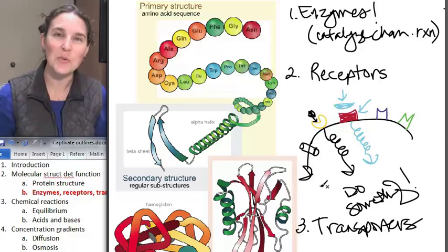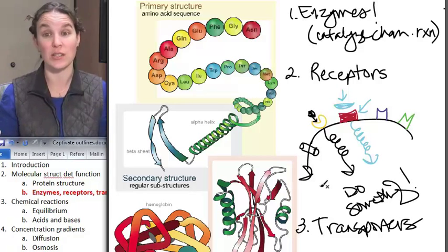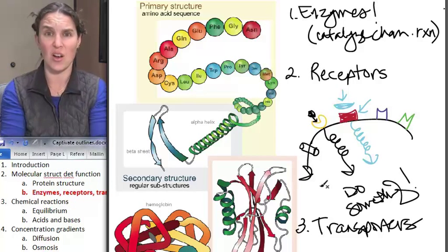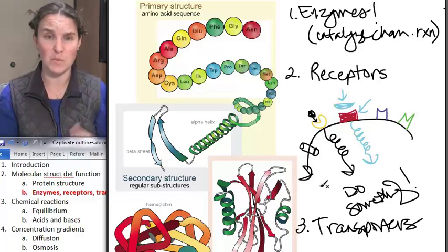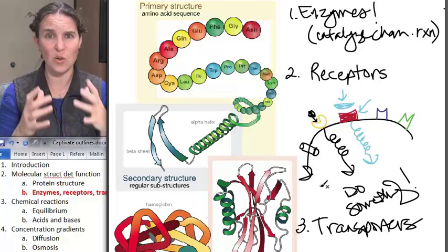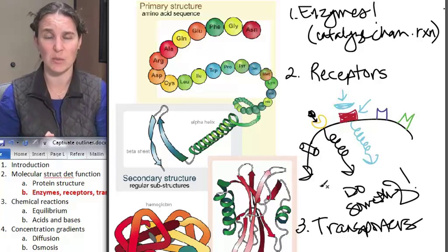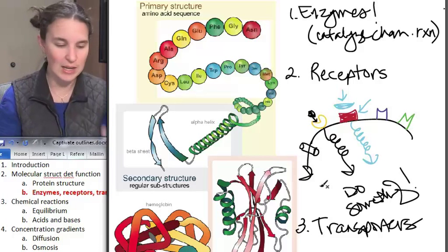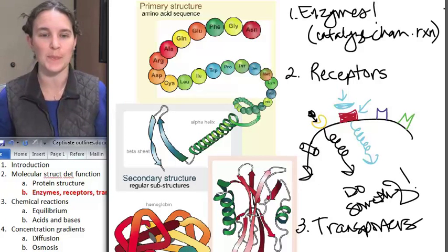So the next thing we're going to look at are chemical reactions in general. You can imagine, I mean, these things, we're dealing with chemical molecules, so chemical reactions take place. So let's take a look at the kinds of chemical reactions that can happen.